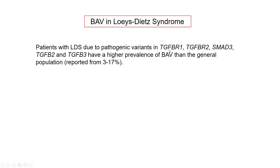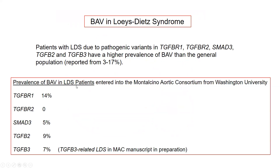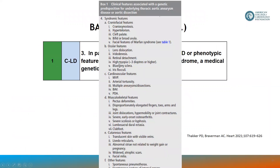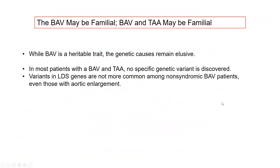In those with Loeys-Dietz syndrome — due to pathogenic variants in one of five recognized genes — there is a higher prevalence of BAV than the general population, reported variably between 3% and 17%. Data from the Montalcino Aortic Consortium showed increased prevalence of bicuspid valves amongst some Loeys-Dietz gene groups. Look for features of underlying syndromic genetic aortopathy in individuals with bicuspid valve, especially with root phenotype — examine the skin, skeleton, and craniofacial features. While the bicuspid valve is heritable, the genetic causes are elusive, and in most individuals with BAV and thoracic aneurysm, no genetic variant is discovered. Variants in Loeys-Dietz genes are not more common amongst non-syndromic bicuspid valve patients, even with aortic enlargement.